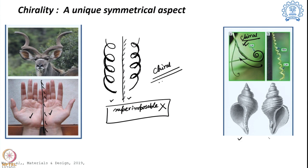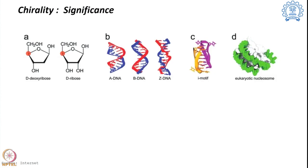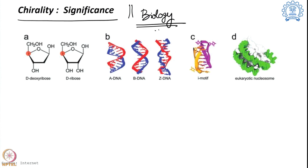A skunk also shows a similar kind of motion — mirror image but not superimposable. We are finding a lot of chirality in systems all around us. But why do we care about chirality? Chirality is very important in biology because biology uses chirality as an identity. The major components of biological systems are carbohydrates, proteins, and nucleic acids.